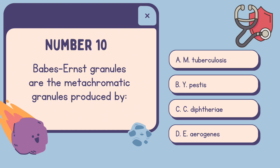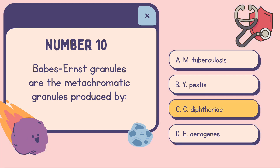Number ten: Babes-Ernst granules are the metachromatic granules produced by — A. M. tuberculosis. B. Y. pestis. C. C. diphtheriae. D. E. aerogenes. The correct answer is C. C. diphtheriae.